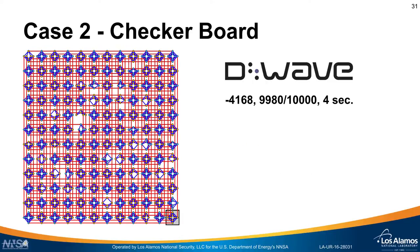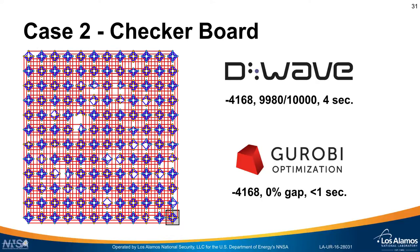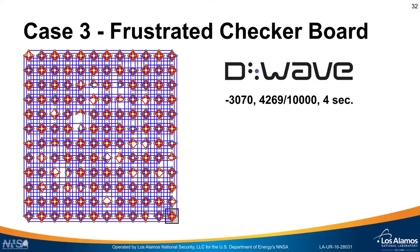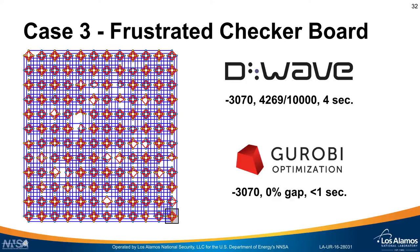We also looked at a checkerboard pattern. If you put this into the D-Wave computer, again you get minus 4168, 99% of the time, in only four seconds. But again, Gurobi gives minus 4168 with a 0% optimality gap for this particular pattern. We then tried a more challenging test case called a frustrated checker pattern. In this case, the D-Wave gives 30-70 as the best solution, but only about 50% of the time, indicating it's a bit harder — in about four seconds. But again, Gurobi can produce a 0% gap in less than one second.